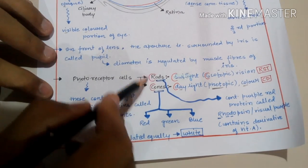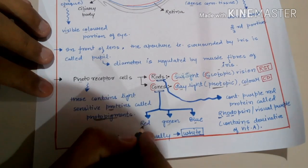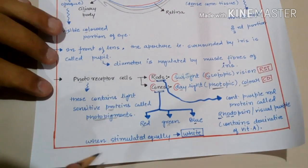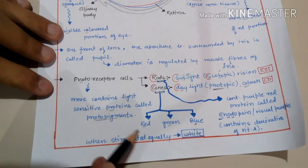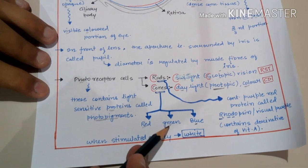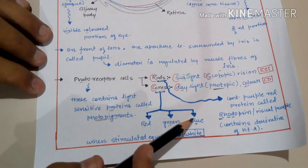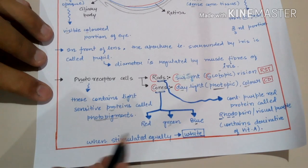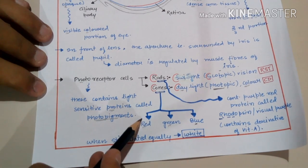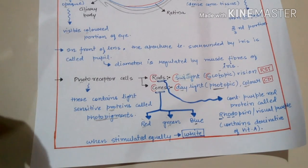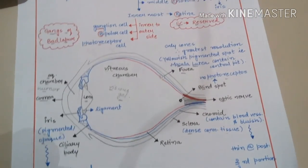Cone cells are of different types: red, green, and blue, which are important for the vision of different colors in daylight. Each type of cone cell has its own photopigments and sensitive cells responsible for reception of different regions of light. When all three are stimulated equally, they form white light. All other colors can be made from combinations of these three. The main receptors are for green, red, and blue colors.